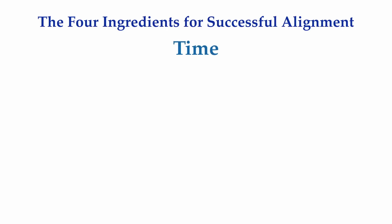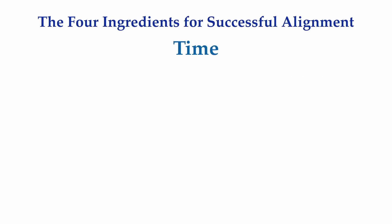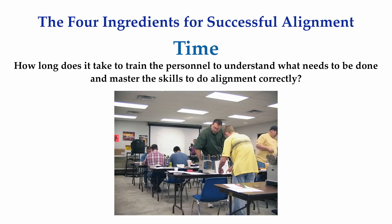Probably the number one complaint heard from people in industry is that they are not given enough time to do the job right. Alignment shouldn't be a race against time. Successful machinery installation encompasses more than just measuring the positions of the shafts, moving machinery around, and bolting it down. True professionals rarely brag about how fast they can perform open-heart surgery, how fast new brakes are installed in a car, how quickly they get customers out of a restaurant, or how fast they can build a house.